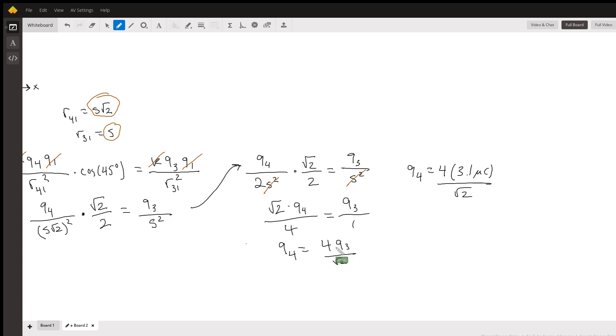Now we can plug in our value for q3, which we know is 3.1 microcoulombs, and in the end we'll get 8.77 microcoulombs for the value of q4.